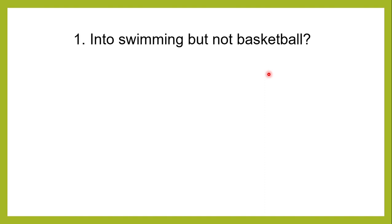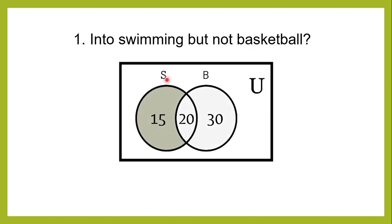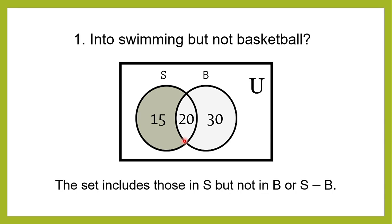For the first question — into swimming but not basketball — we represent it with a Venn Diagram, where S is swimming and B is basketball. The shaded region is 15, because it includes only the elements in S and not in B, which we call S minus B, or the difference of swimming and basketball. We did not shade the 20 because that value is part of basketball. Therefore, the answer is 15 students.